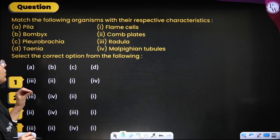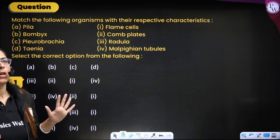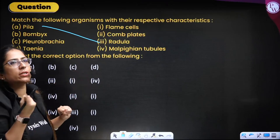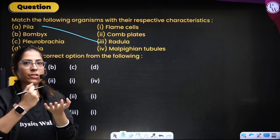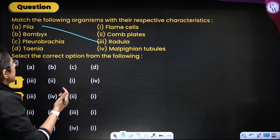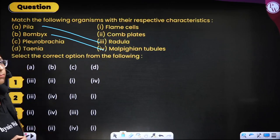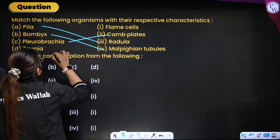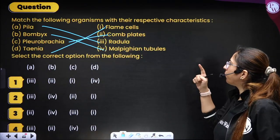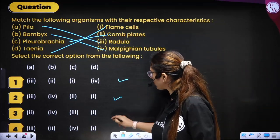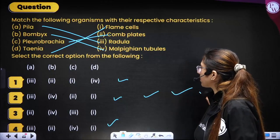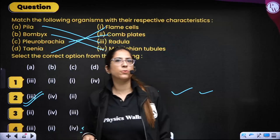Next question: match organisms with their characteristics. Pila has a radula — a masticating structure for grinding. Bombyx mori (silkworm, an insect) has Malpighian tubules — all insects have Malpighian tubules. Pleurobranchia (Ctenophora) has comb plates. Taenia solium has flame cells — which show flickering action and help in excretion. The correct combination is option 2.